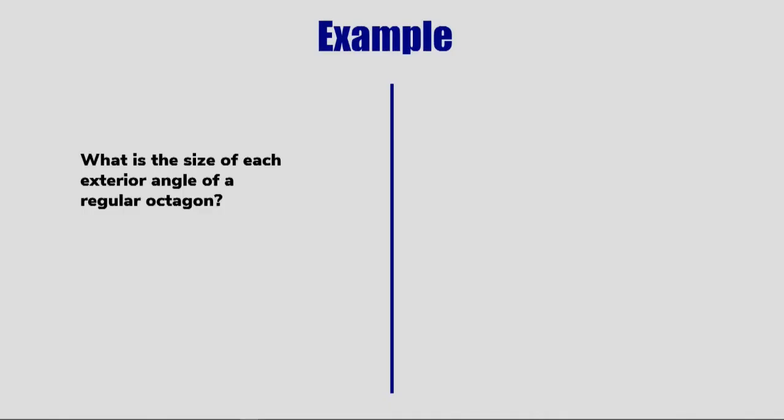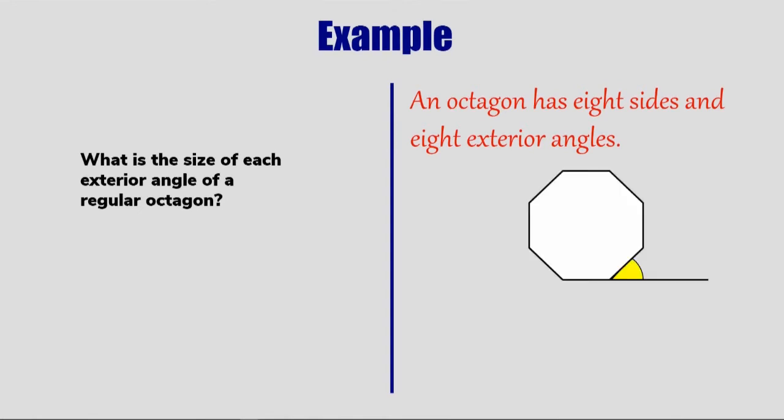So let's have a look at some examples. What is the size of each exterior angle of a regular octagon? Well, an octagon has eight sides, so it also has eight exterior angles. Each of them would look like that - you extend one side and it's the angle that's made by those two lines there. So how many of them are all the way around the octagon? There are eight. So if we divide 360 by 8, or 360 over 8, we'll get the answer 45. So each exterior angle is 45 degrees.